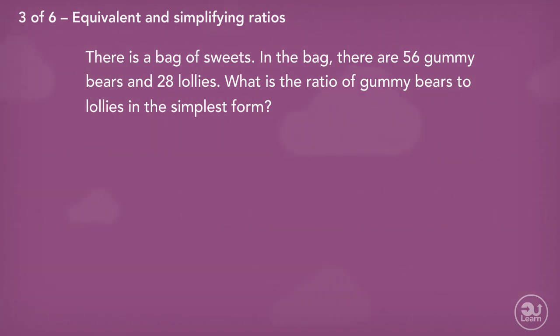we write the ratio based on the order the question presents the items in the bag. Gummy bears was said first, followed by lollies, therefore the ratio must be written as 56 to 28.